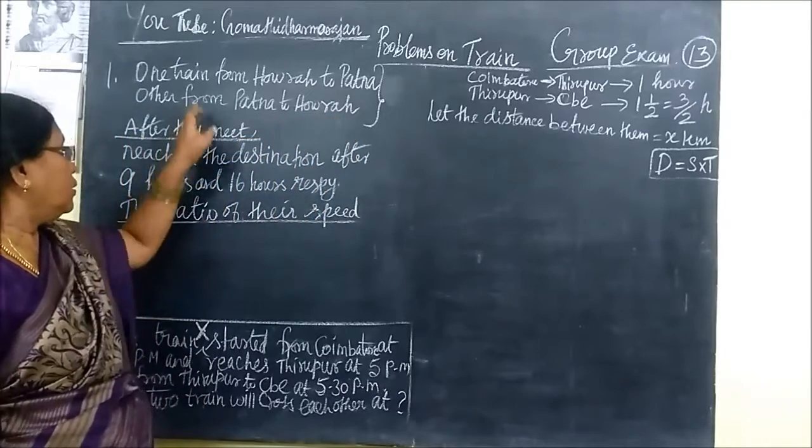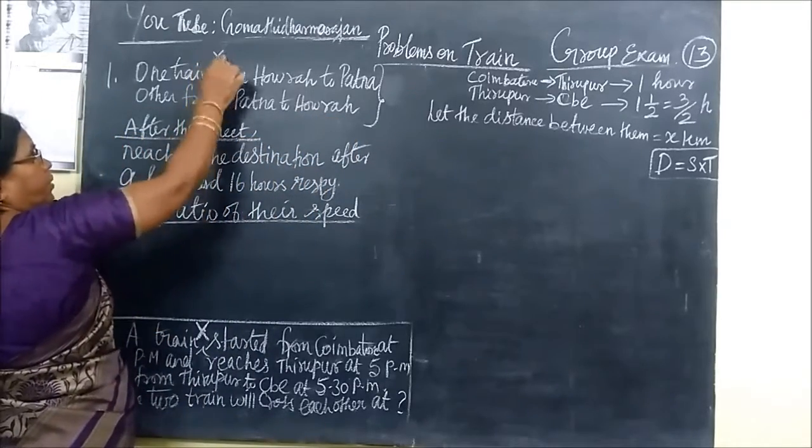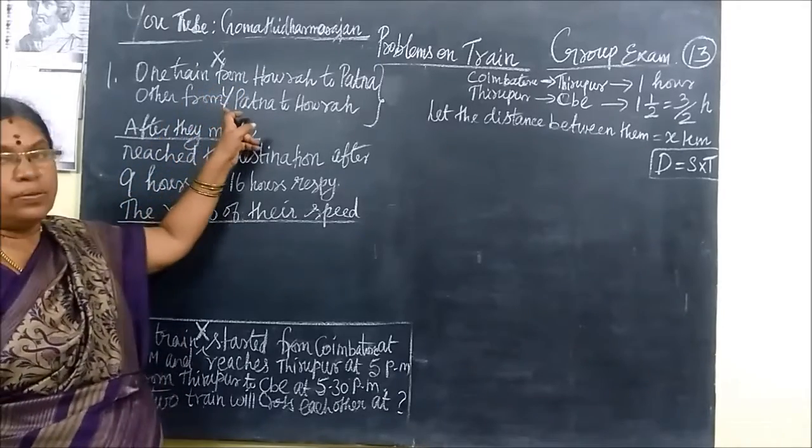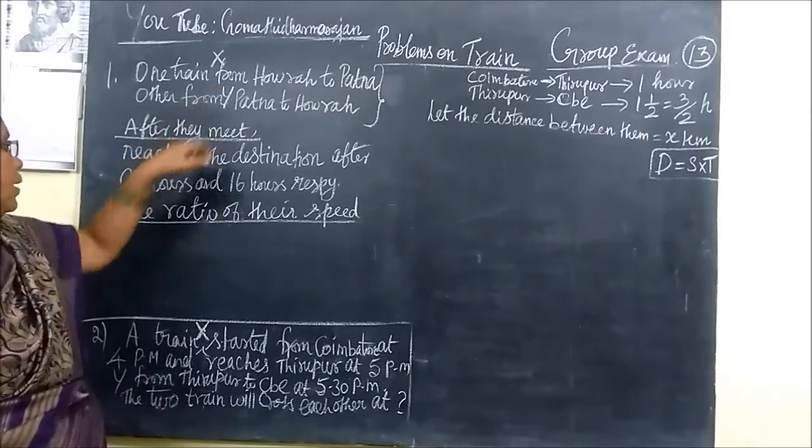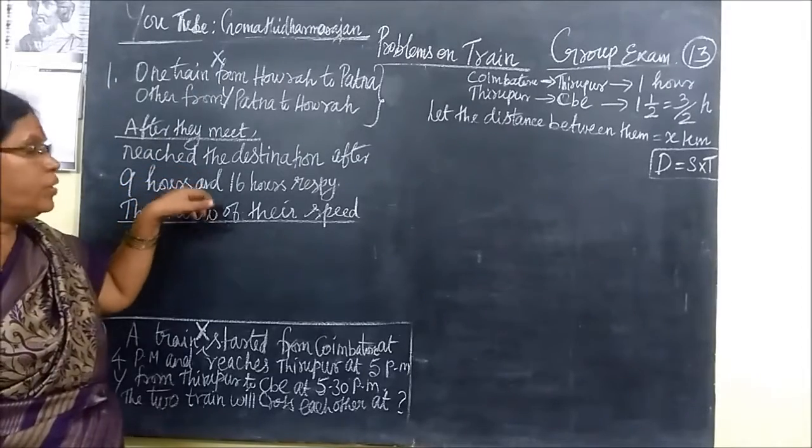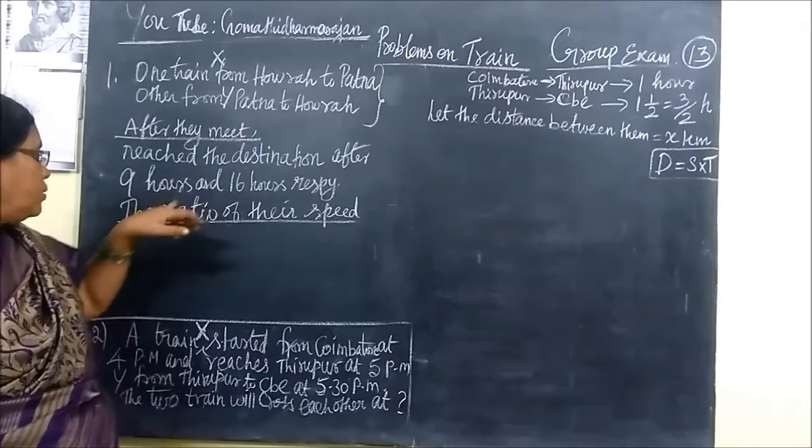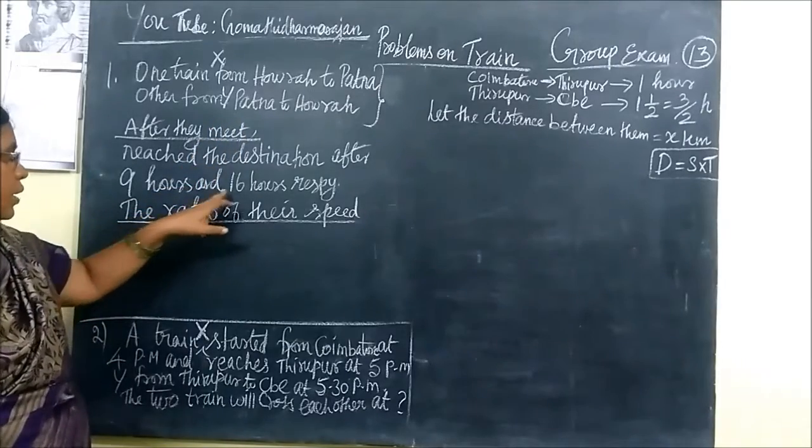It takes, suppose if it is X and if it is Y. The train is X and the train is Y. Train X takes 9 hours to reach the destination and the train Y takes 16 hours to reach the destination.